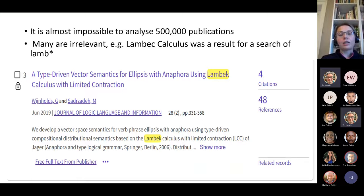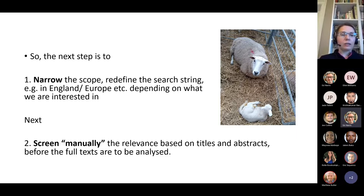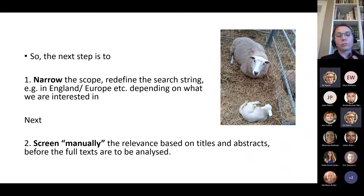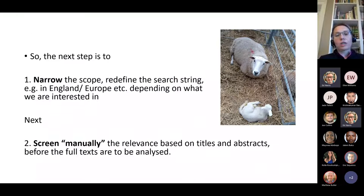When I do the screening, I just categorise it as non-relevant. Given this volume of papers, we need to narrow the scope and redefine the search string — for example, to add that we are specifically after lameness in England, in Europe, or in the US. We can just narrow the years of publication. But once it is done and agreed with whoever is interested in the systematic review, we do the screening manually. We just go through titles and abstracts and categorise relevant or irrelevant before the full text can be analysed.